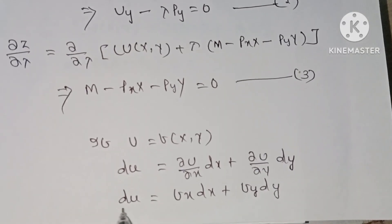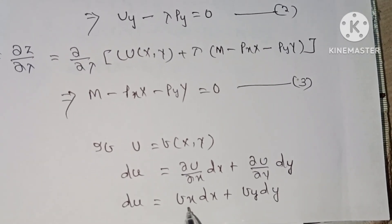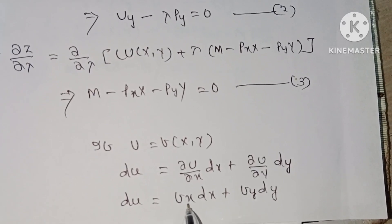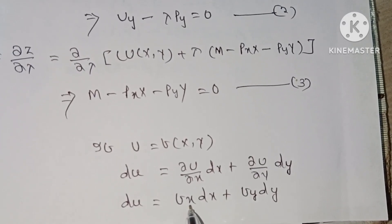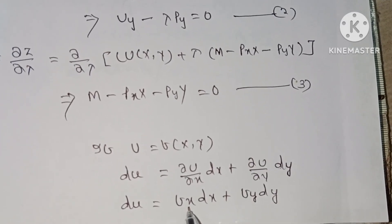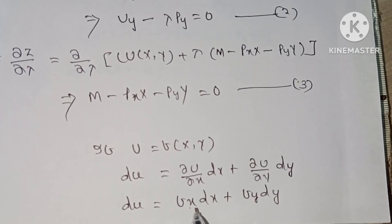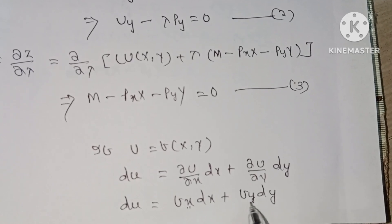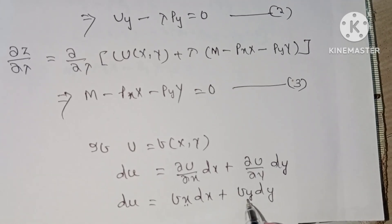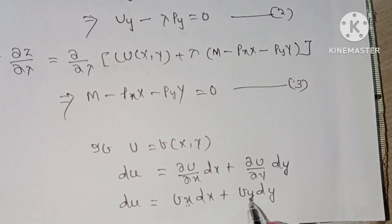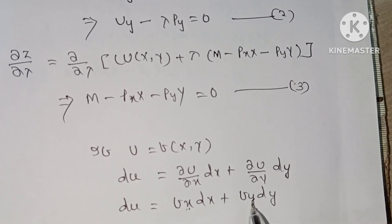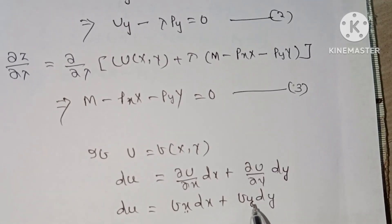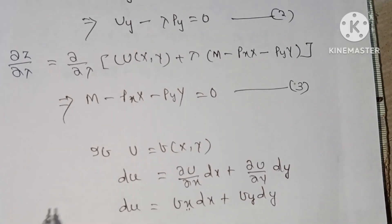We can also write this as du equals fx·dx plus fy·dy, where fx represents the partial derivative of the utility function with respect to x and fy represents the partial derivative of the utility function with respect to y.